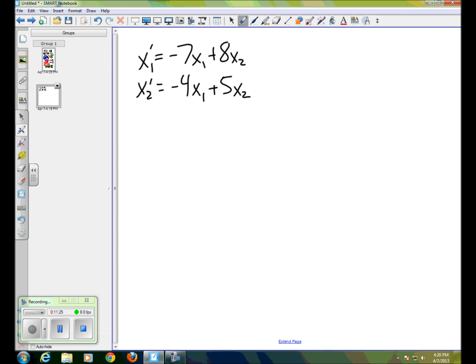And we said that that was equivalent to this matrix equation. So we had x1 prime, x2 prime equals A. The A matrix is just negative 7, 8, negative 4, 5, times the vector x1, x2.